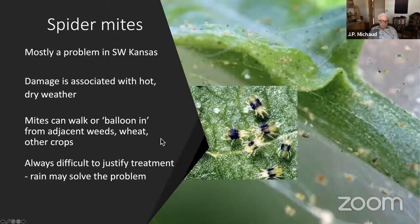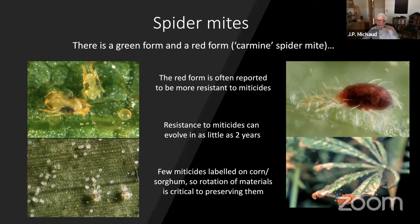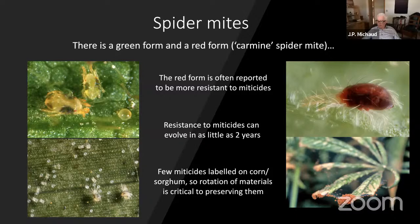There are two forms of spider mites — a red form and a green form — and we've been seeing both of them. I used to think they were two different species, but they aren't. There is anecdotal evidence that the red form tends to be more resistant to miticides, though I don't know if that's been quantified. But there's a lot of variation between populations of mites with respect to resistance, whether red or green. Resistance to miticides can evolve in as little as two years, and we don't have a lot of miticides registered, so it's really important to rotate materials if you have to treat for them — and when you have to treat, you may very well have to treat more than once.